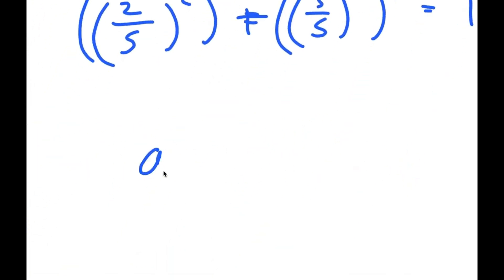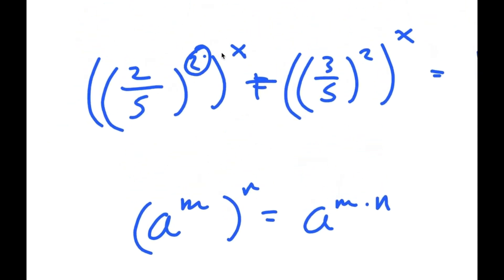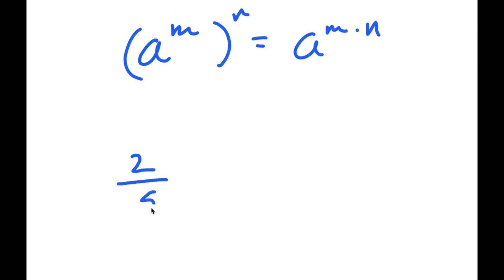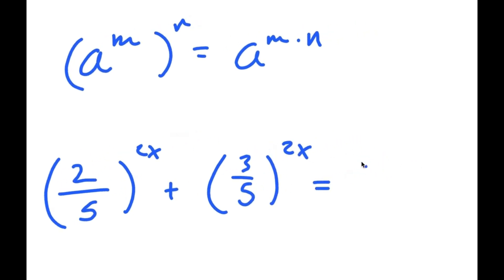From here, if I have something in the form a to the power of m to the power of n, this is equal to a to the power of m times n. So the 2 and x multiply, and I get 2 over 5 to the power of 2x, plus 3 over 5 to the power of 2x, is equal to 1.